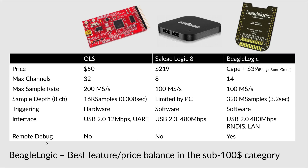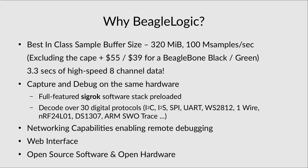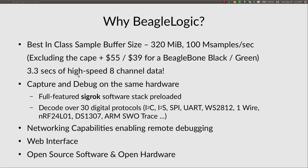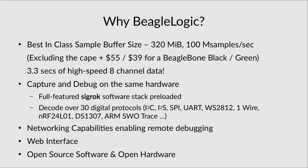Because BeagleLogic has networking capabilities, it supports remote debugging functionality. In a nutshell, BeagleLogic offers the best feature-to-price balance you will find across logic analyzers in the sub-$100 category. It has a best-in-class sample buffer size of 320 megabytes at 100 mega-samples per second, which amounts to 3.3 seconds of high-speed eight-channel data. Because the BeagleBone is a full-featured Linux computer, you can not only capture data but also run analysis on it without any external PC.